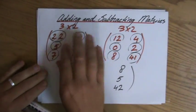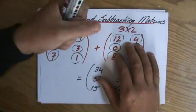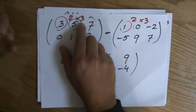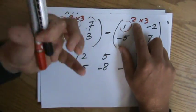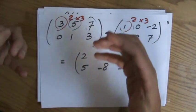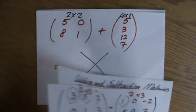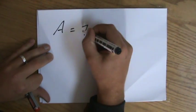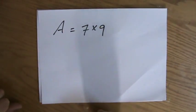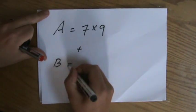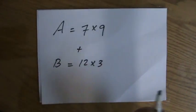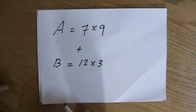So if the first one is a 3 by 2, the second matrix has to be of order 3 by 2. If the first one is of order 2 by 3, the second one has to be order 2 by 3, if you're adding and subtracting. Let's say you get the question, you have a matrix A, and that is a 7 by 9 matrix, can you add matrix B, which is a 12 by 3 matrix? No, you can't, because the order of the matrices is not the same.